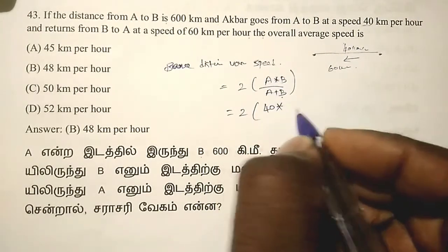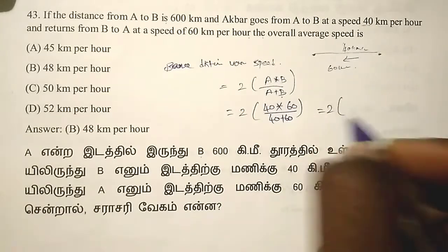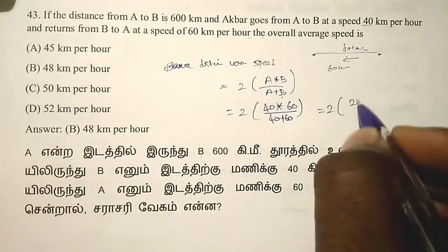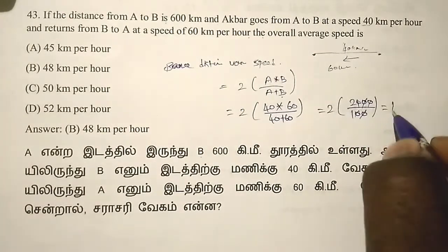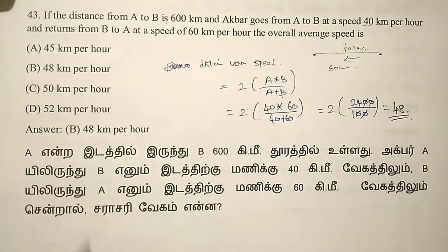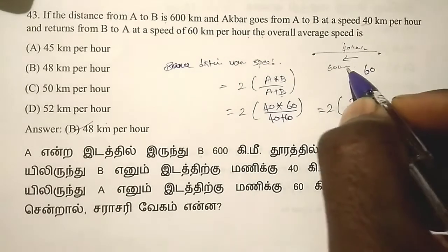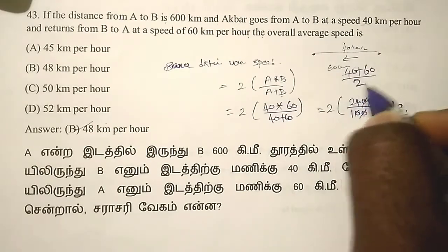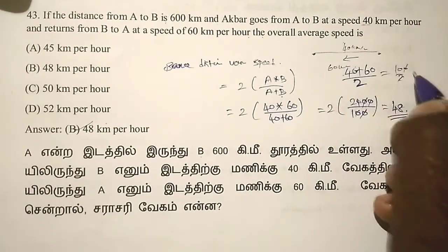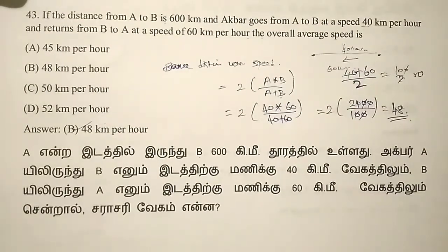So the answer is 48 km per hour. Now, the average speed: if you think 1 plus 1 equals 2, and take 100 divided by 2 equals 50 — we take that as the answer — that is the mistake. When the distance is the same, we must use the formula 2ab/(a+b), not the simple average.